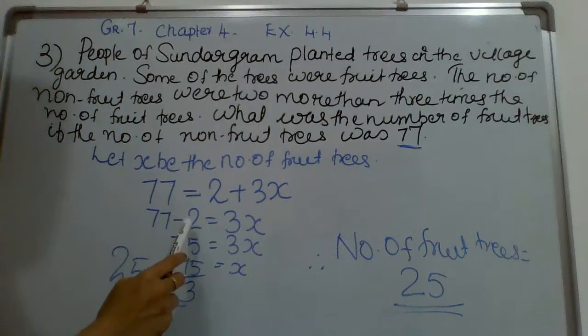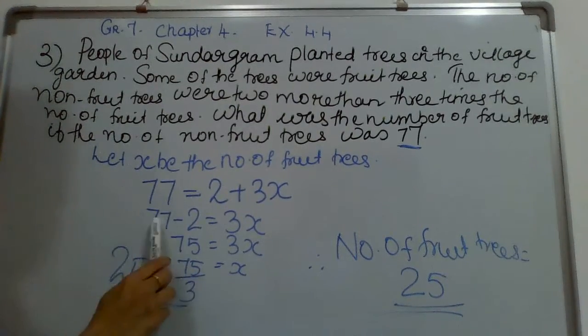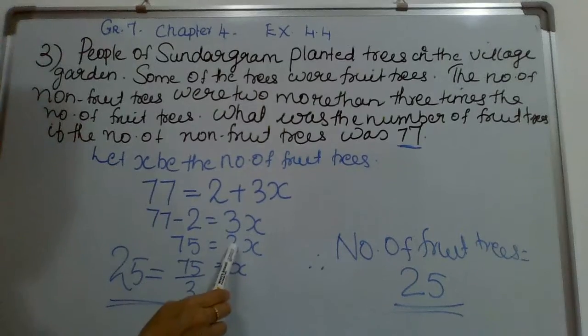So: 77 minus 2 equals 3x, and 77 minus 2 is 75, which equals 3x.